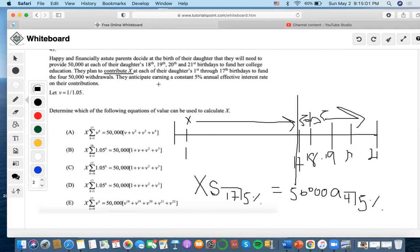So it says that they anticipate earning a constant 5% annual effective interest rate, so that is why we put 5% in the future value thing. So in comparison, first of all, I think we should get rid of these because we're not discounting each of these birthdays all the way to zero. We're kind of dividing this timeline into two parts to create an equation, and we're setting T equals 17 as the comparison date for this part. So we're not discounting it back by so many years to zero. So E is out.